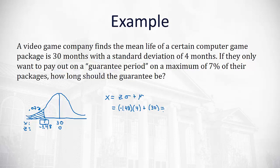The standard deviation we know is 4 months plus the mean of 30 months. When we do this on our calculator, we end up getting 24.08 months.